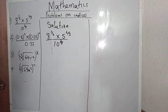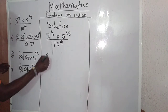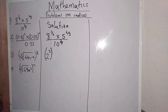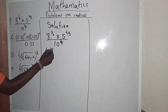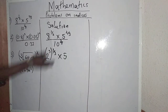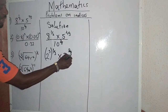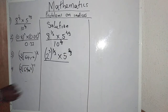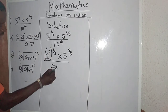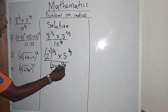2 raised to the power 3 is equal to 8. Therefore, I can express this as 2 raised to the power 3, in brackets. Multiply by 5 — there's nothing you can do to this 5 because it's a prime number — raised to the power 2/3. All divided by 10, which I can express as 2 times 5, in brackets, raised to the power 2/3.